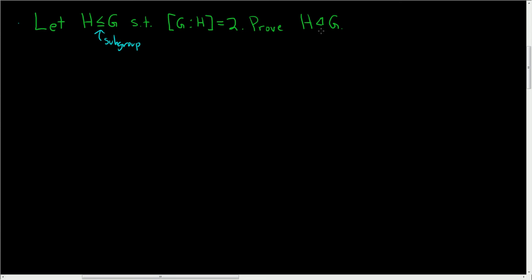And we want to prove that H is normal in G. So recall that H is normal in G means that the right cosets are equal to the left cosets. So in other words, the set of right cosets is equal to the set of left cosets.